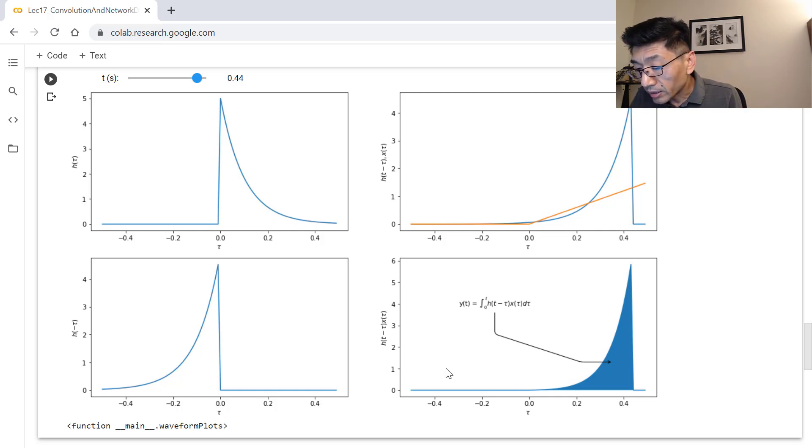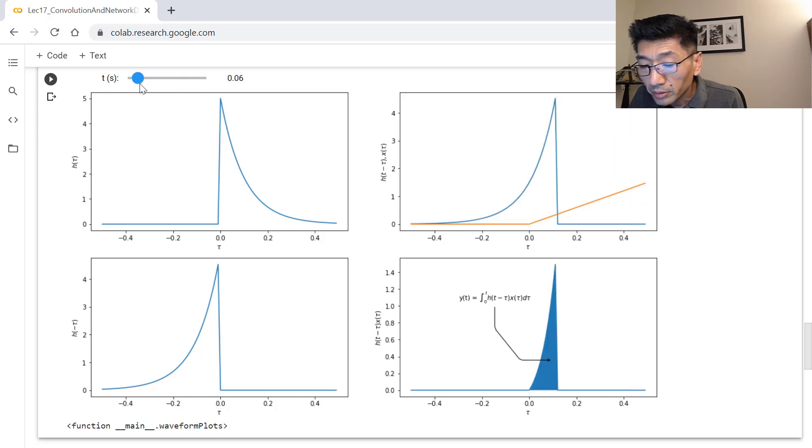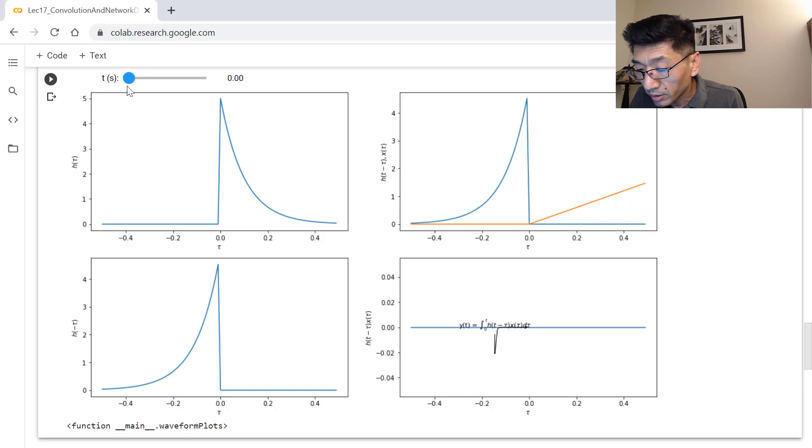And the product of h(t minus tau) will change. But the area underneath is going to be the x, the input. So if I move this closer to zero, you see the output y should be close to zero.